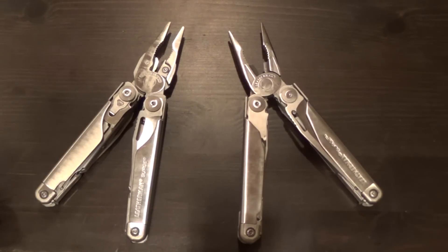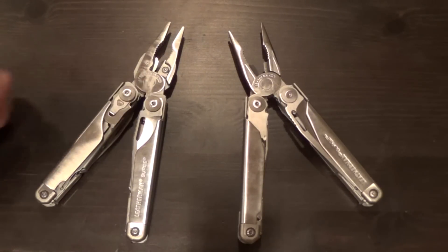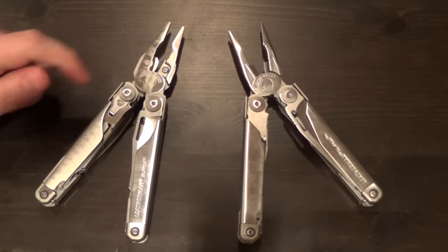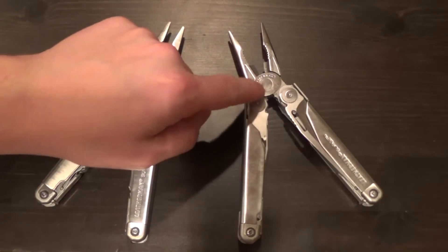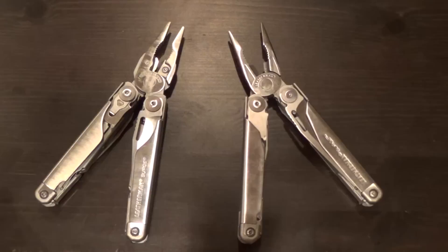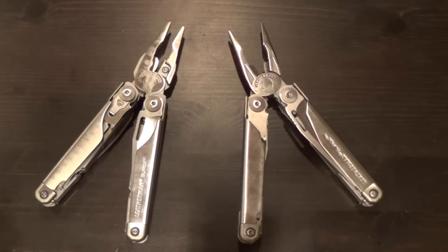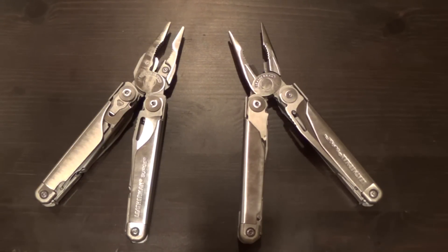So this new Leatherman Surge is nearly identical to the old one, except for a couple small differences. The first you'll notice is the removable cutter heads with the hardened 154cm stainless steel wire cutters. A much harder steel than whatever is being used on the wire cutters here. And that has been a complaint with this full-size heavy-duty multi-tool. People were getting upset when they were dinging up the wire cutters on their Surge, using it as a full-size set of pliers. So that's actually a pretty smart upgrade.